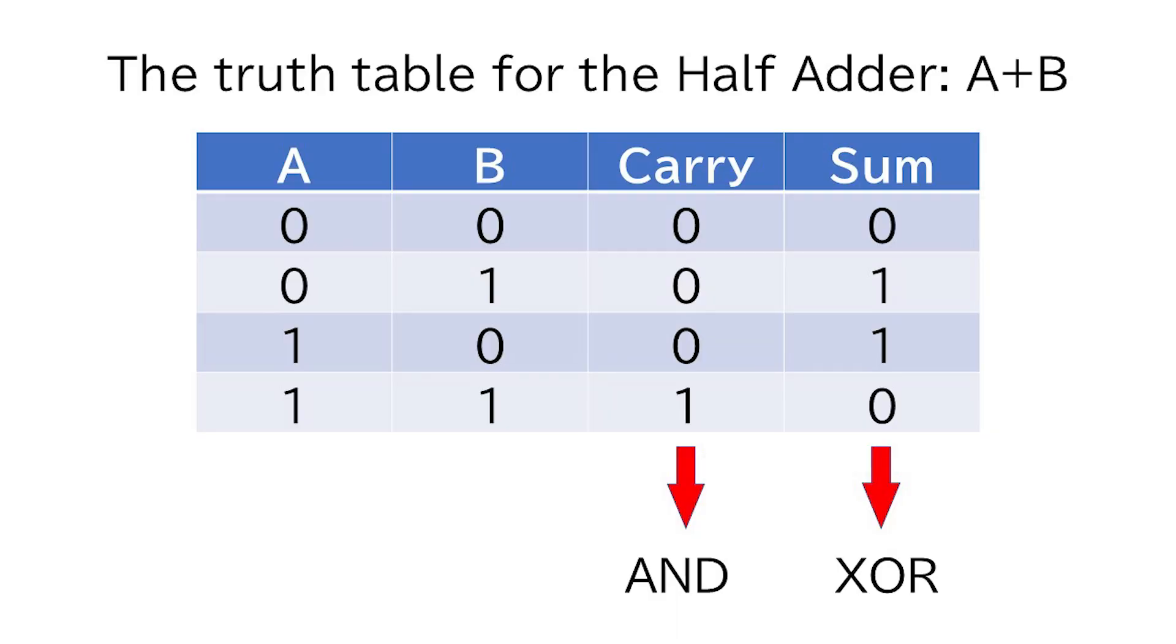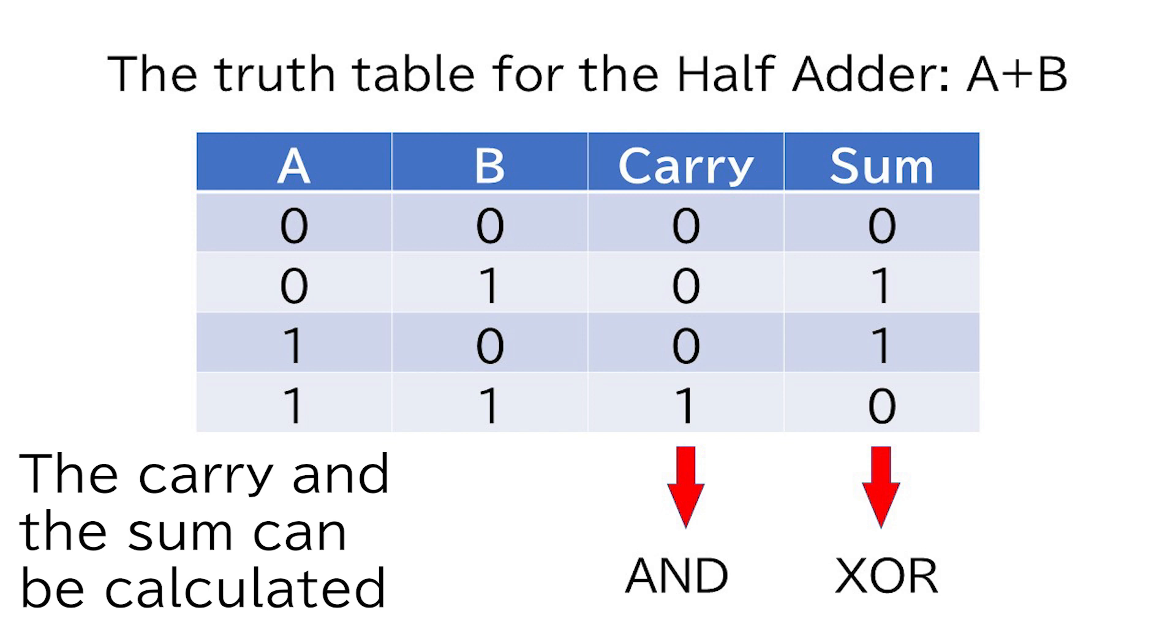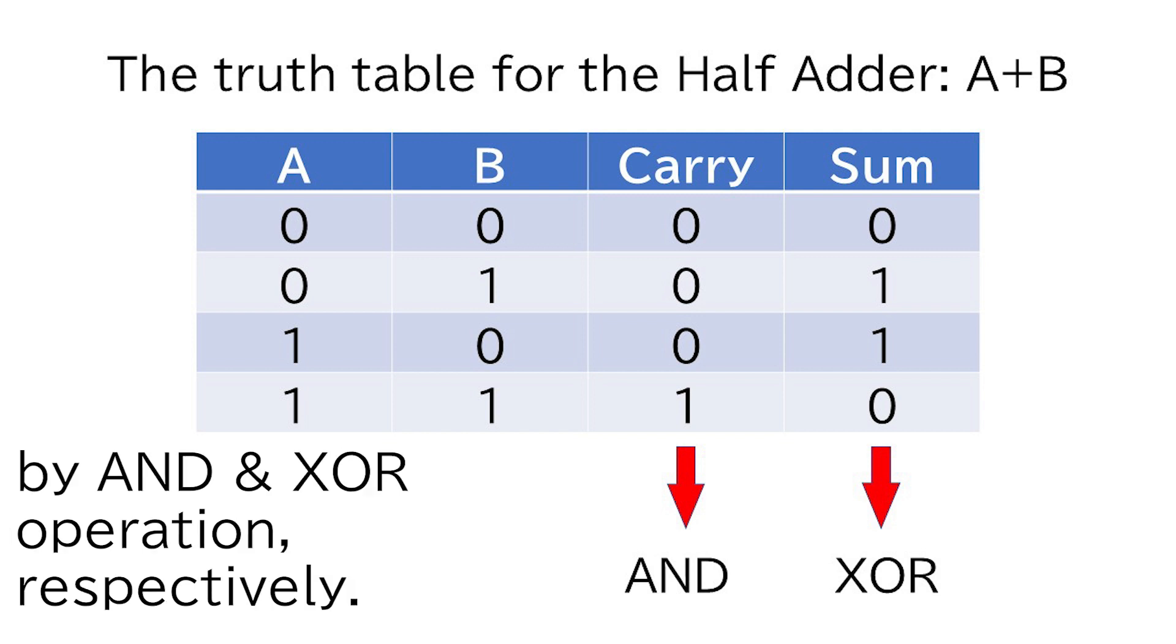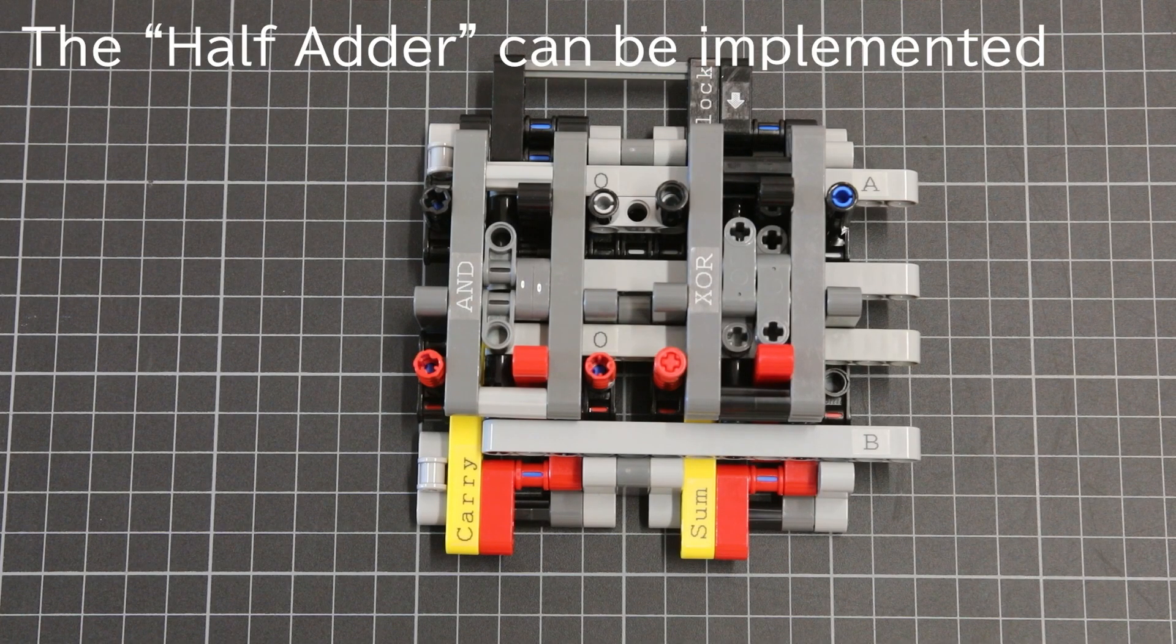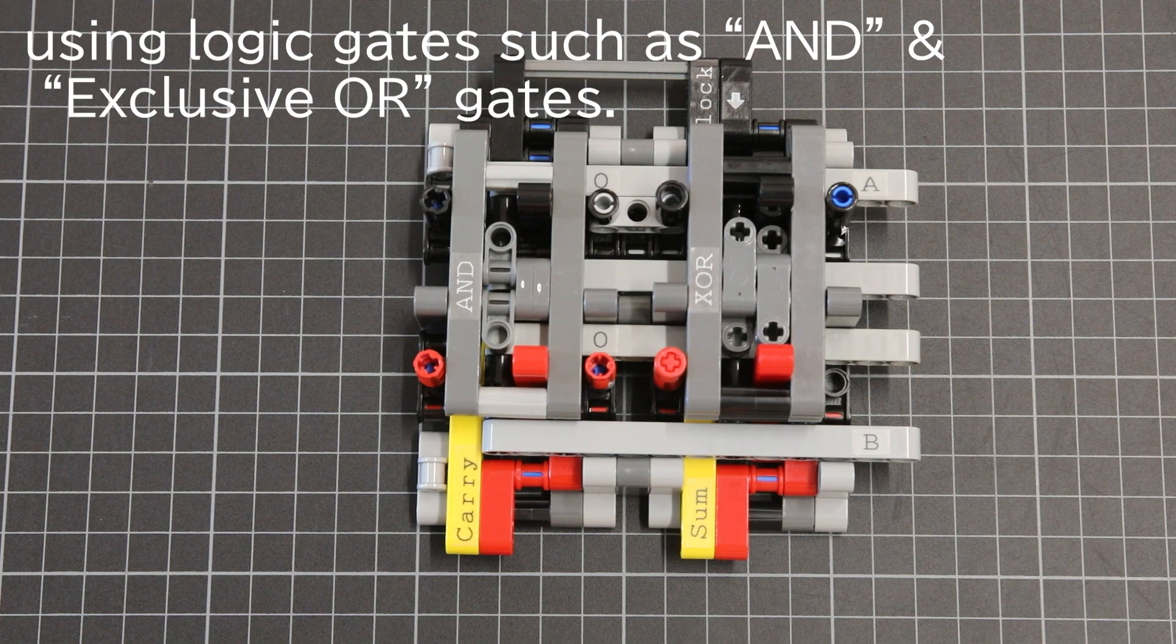Here is the truth table for the half-adder. The carry and the sum can be calculated by AND and XOR operation respectively.